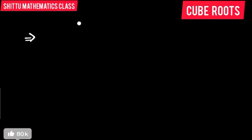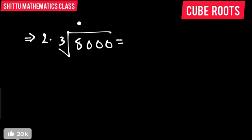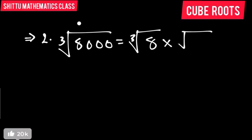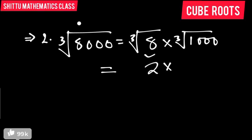Now the second one: the cube root of 8,000. This can be split as the cube root of 8 multiplied by the cube root of 1,000, because we are having three zeros. The cube root of 8 is 2, because 2 × 2 × 2 = 8. The cube root of 1,000 is 10. Therefore the cube root of 8,000 is 20.